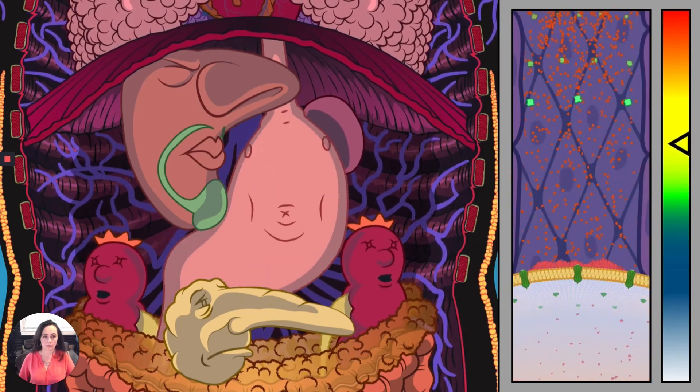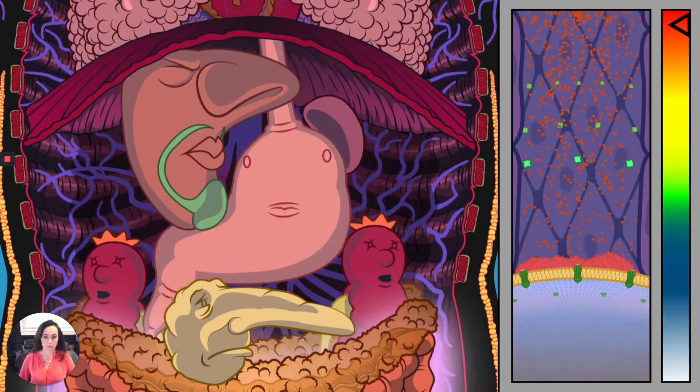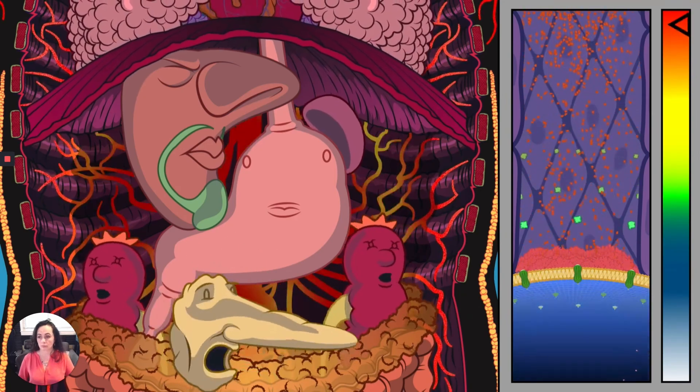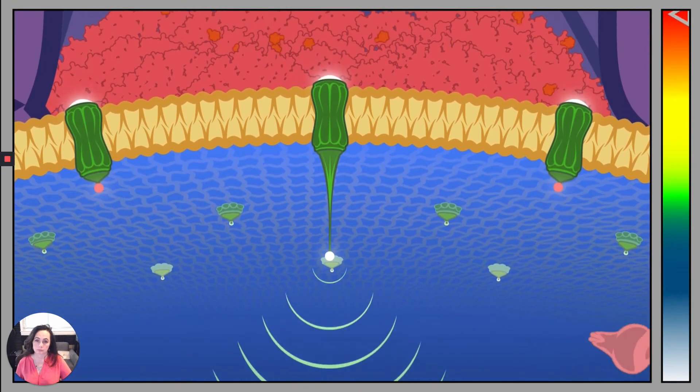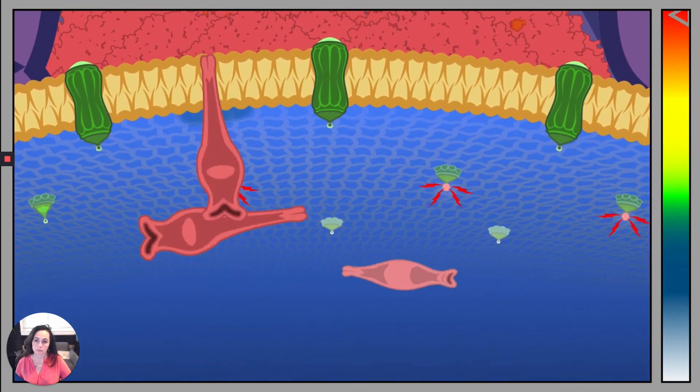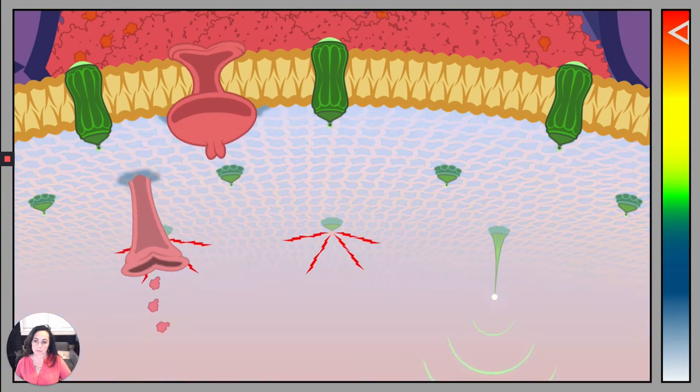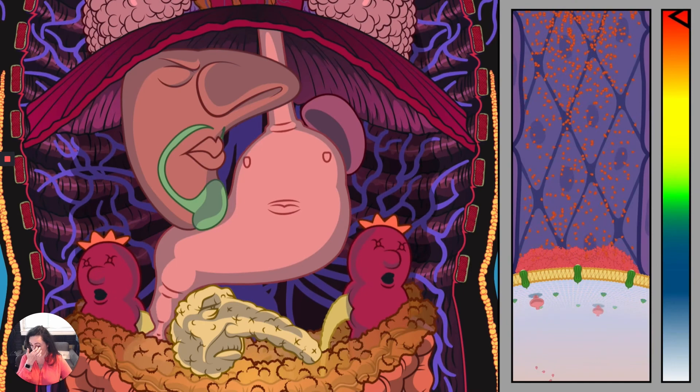Most people with untreated type 2 diabetes have two problems with insulin. The first is insulin resistance. Cells stop responding to its signal. Fewer sugar channels make it to the cell surface. Without them, sugar can't get into your cells.